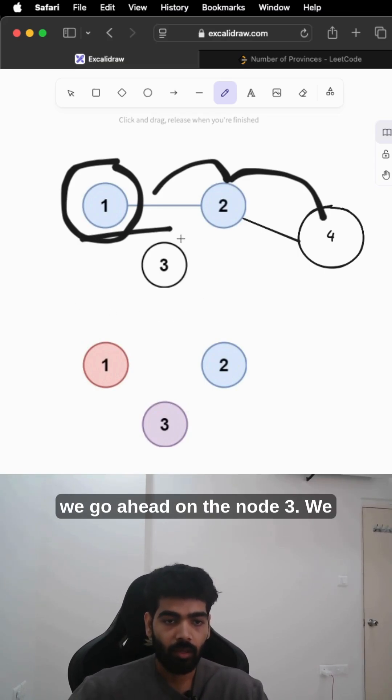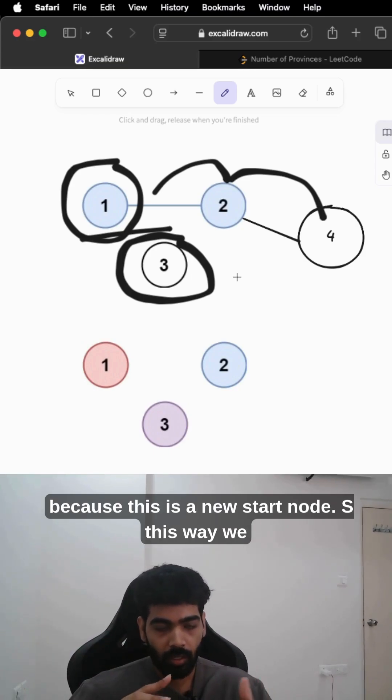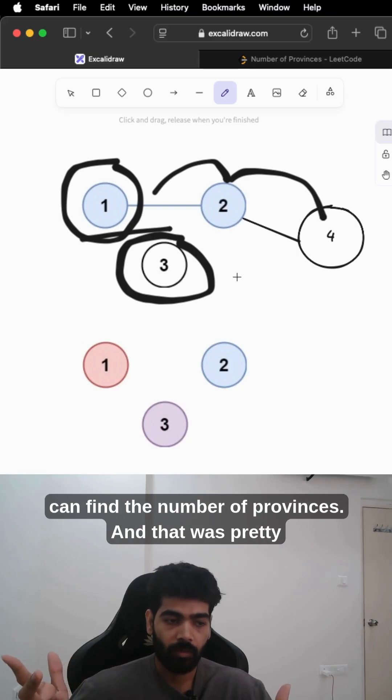There are no more nodes left to traverse, so we go to node three. We mark it as visited and increase provinces by one because this is a new start node. In this way we can find the number of provinces.